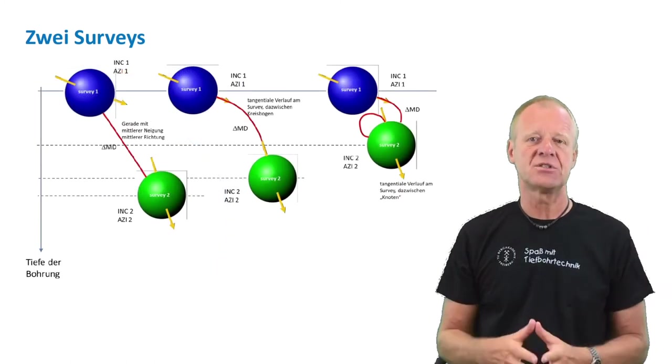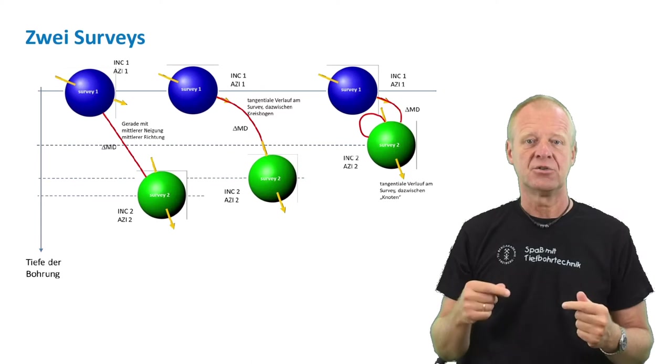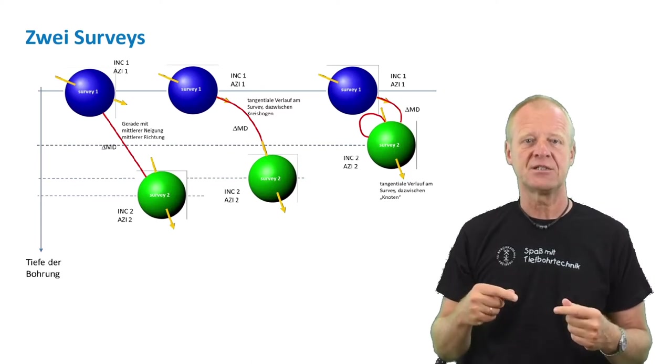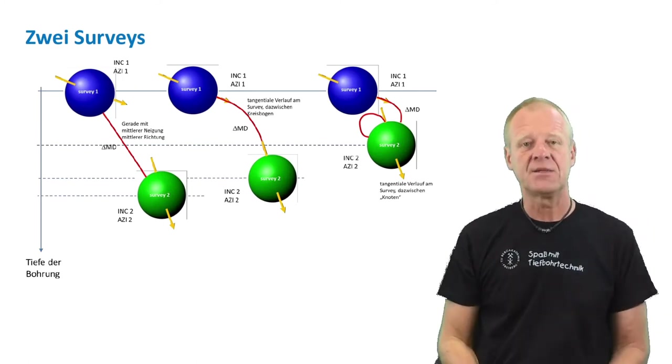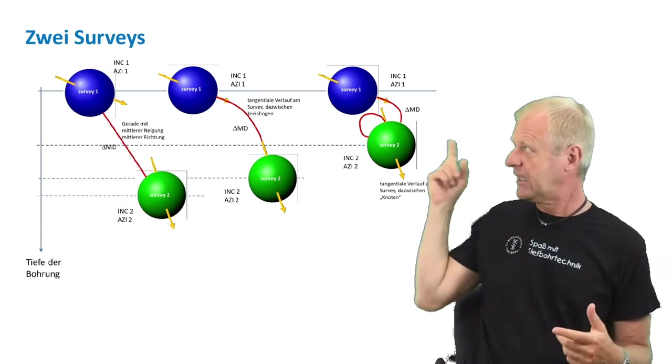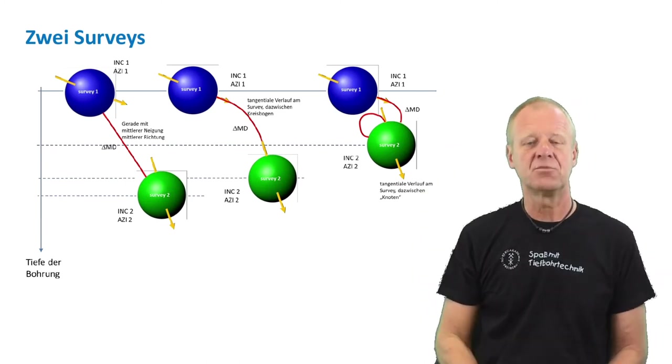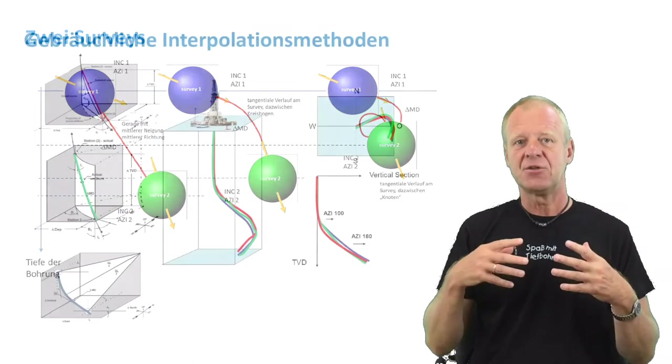This same problem applies to the computer. The computer does not know how the well path looks between two measuring points. It has to rely on an assumption the programmer of the software gives to it. In fact, there are several theoretical models that are commonly used in those software packages. The programmer simply decides which it likes best and uses it.